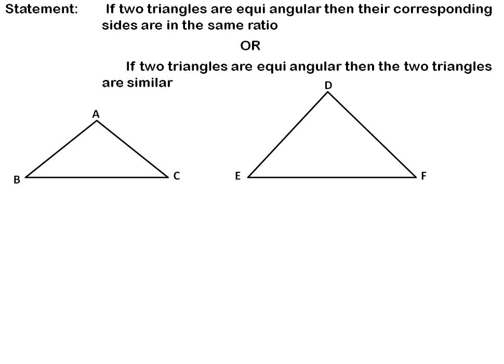Now I will write the given part. Triangles ABC and DEF are the two triangles. The first part of the statement says the triangles are equiangular, meaning their corresponding angles are equal. In triangle ABC and triangle DEF, the corresponding angles are: A and D, B and E, C and F.